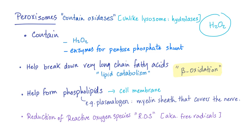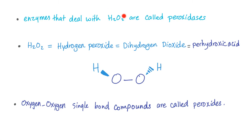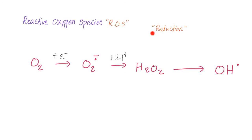Peroxisomes also help in the reduction of reactive oxygen species, also known as free radicals. Enzymes that deal with hydrogen peroxide are called peroxidases. Hydrogen peroxide is also known as dihydrogen dioxide, or perhydroxic acid. It contains an oxygen-oxygen single bond called a peroxide bond. In the reduction process: we start with oxygen, add an electron — since an electron has a negative charge, this process is reduction, not oxidation — producing the superoxide.